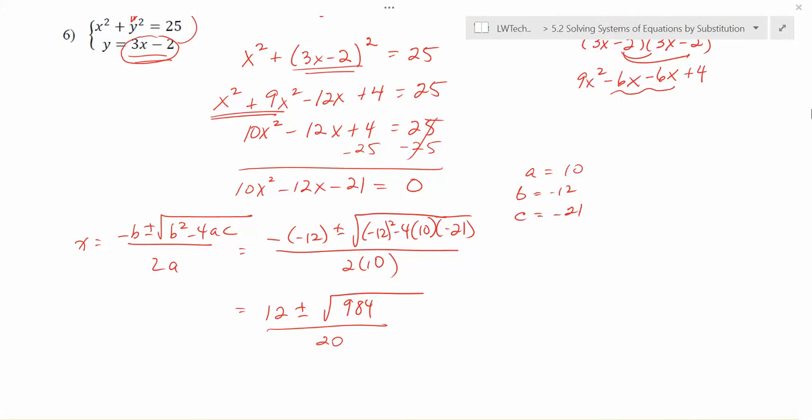So we could simplify this with a perfect square or by checking for perfect squares and pulling them out in simplest radical form. For this one, though, let's just go ahead and get decimal values that we'll be able to use for the other parts of the problem. For the first one here, what we're going to have is 12 plus radical 984 divided by 20. And on the bottom, we're going to have 12 minus radical 984 divided by 20. And this will give us our two different solutions.